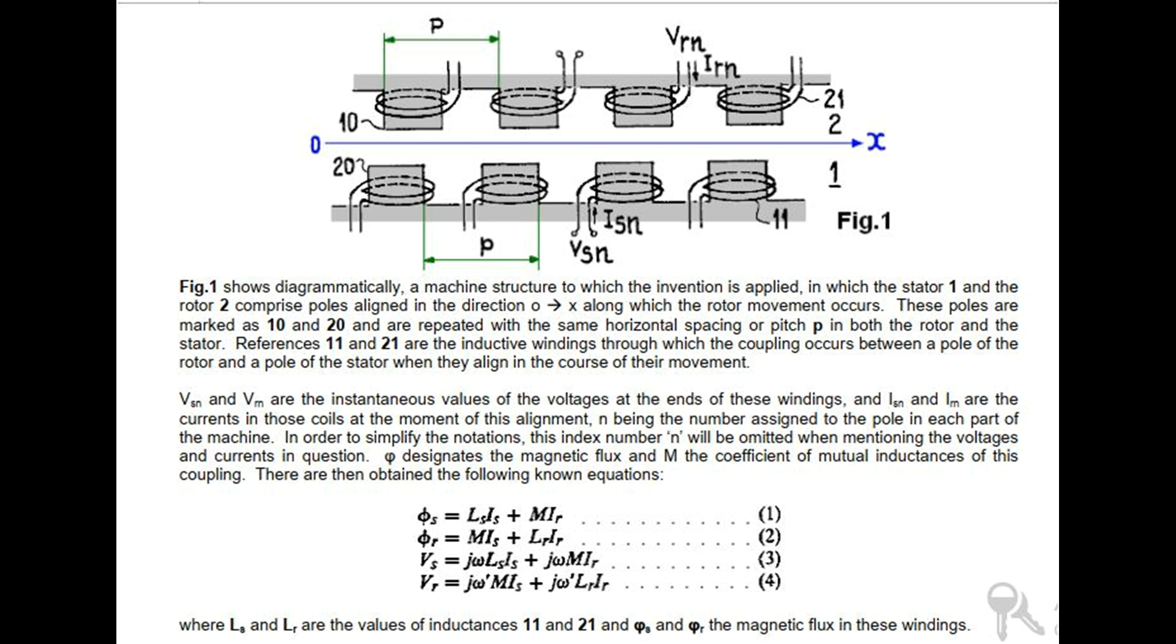Fig 1 shows diagrammatically a machine structure to which the invention is applied, in which the stator 1 and the rotor 2 comprise poles aligned in the direction OX along which the rotor movement occurs. These poles are marked as 10 and 20 and are repeated with the same horizontal spacing or pitch P in both the rotor and the stator. References 11 and 21 are the inductive windings through which the coupling occurs between a pole of the rotor and a pole of the stator when they align in the course of their movement. VSN and VRN are the instantaneous values of the voltages at the ends of these windings, and ISN and IRN are the currents in those coils at the moment of this alignment, N being the number assigned to the pole in each part of the machine. In order to simplify the notations, this index number N will be omitted when mentioning the voltages and currents in question. Phi designates the magnetic flux and M the coefficient of mutual inductances of this coupling.